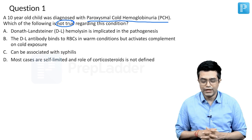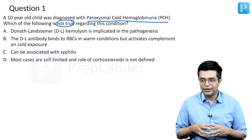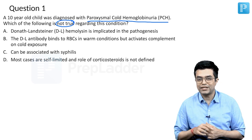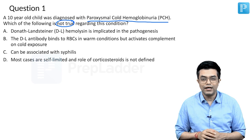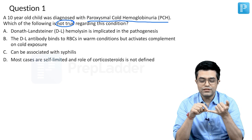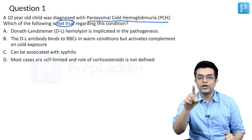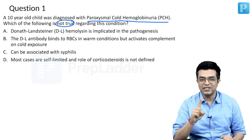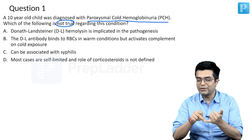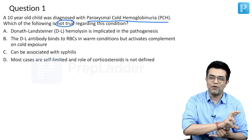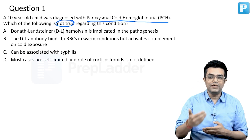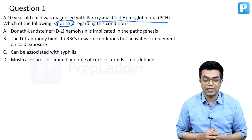Regarding PCH, the antibody implicated is a cold-sensitive antibody called the Donath-Landsteiner antibody, directed against the P glycoprotein of the RBCs. The key concept is that this antibody binds to the RBCs on cold exposure, but hemolysis does not happen in the cold. Hemolysis happens when the RBCs — which have this antibody bound — are exposed to a warm environment, at which point complement activation occurs.